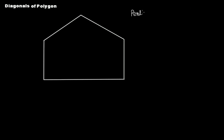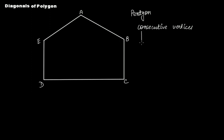Now let's move to this five-sided figure. It is a five-sided polygon called a pentagon. Let's name the vertices starting from A, B, C, D, and E. The consecutive vertices are: A and B, A and E, B and C, C and D, and D and E.